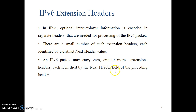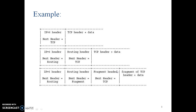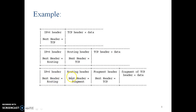Each extension header is identified by the next header field of the preceding header. Here are three examples. First: an IPv6 header with next header value TCP, followed by a TCP header plus data. Second: an IPv6 header with next header value routing, so there is a routing header, and inside the routing header the next header value is TCP, followed by TCP header plus data. Third: an IPv6 header with next header value routing, inside routing header the next header value is fragment, and inside the fragment header the next header value is TCP, followed by a fragment of TCP header plus data.